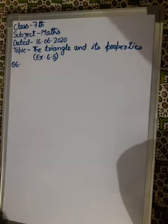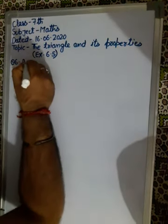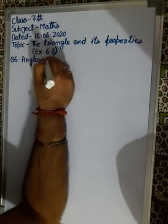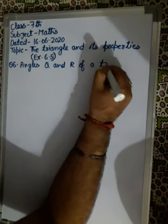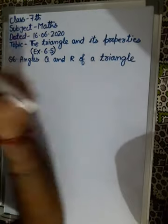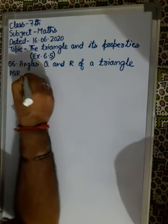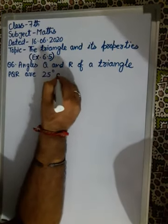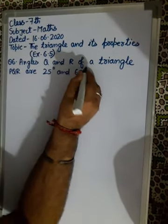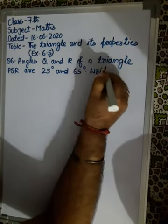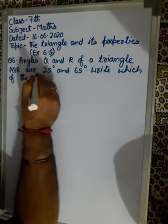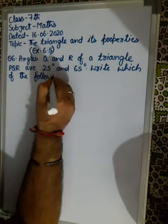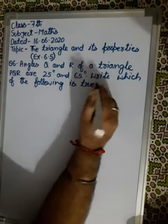Let's look at question number 6. The question asks: Angles Q and R of a triangle PQR are 25 degrees and 65 degrees. Which of the following is true?